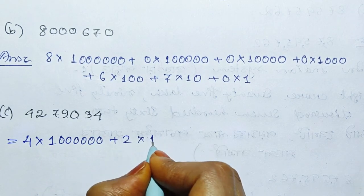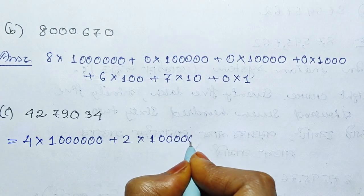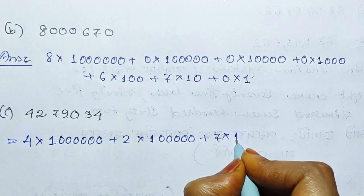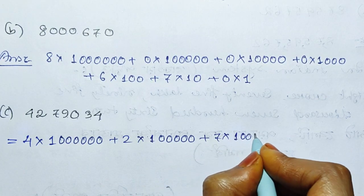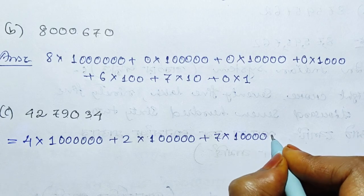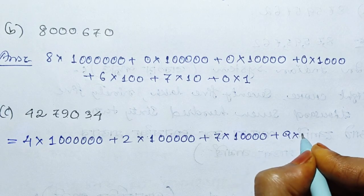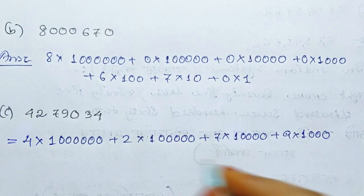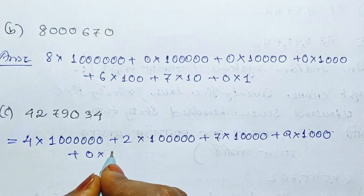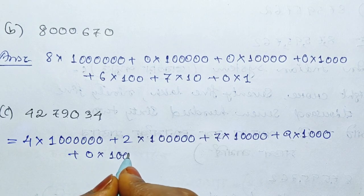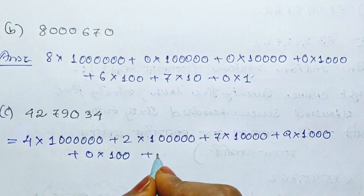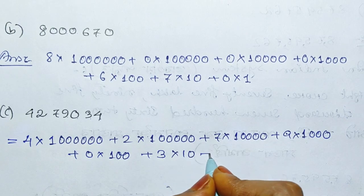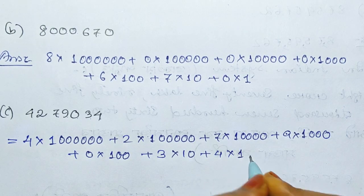2 into 1,2,3,4,5. Then 7 into 1,2,3,4. Plus 9 into 1,2,3. Plus 0 into 100. Plus 3 into 10. Plus 4 into 1.